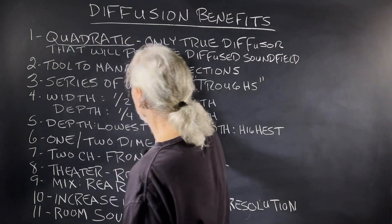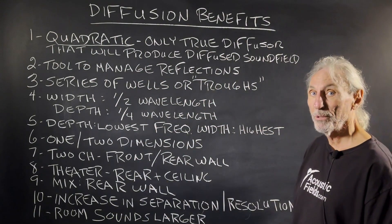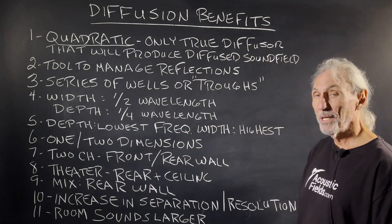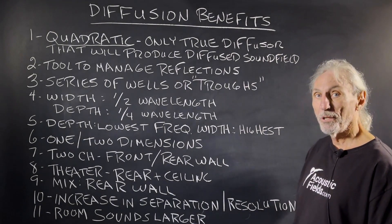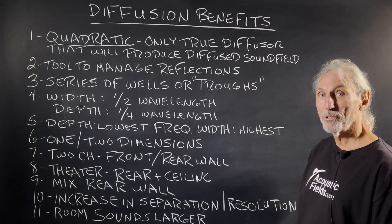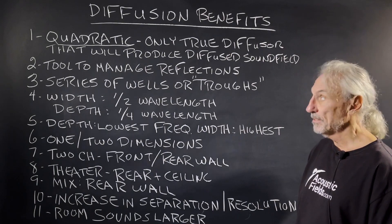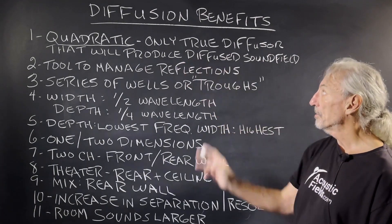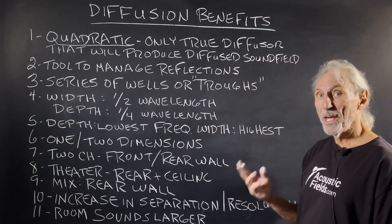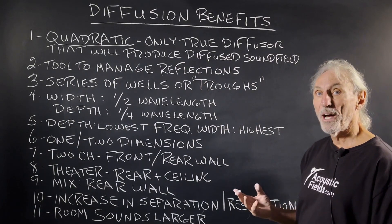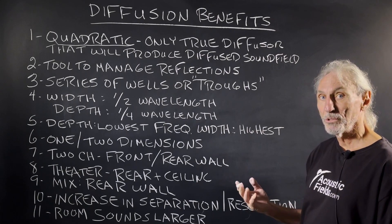We only use one type. There are tons of different names out there and diffusion is a label people use all the time — I saw it on some foam the other day, and that's all nonsense. Quadratic is the only true diffuser that will satisfy the five rigid criteria to produce a diffused sound field.